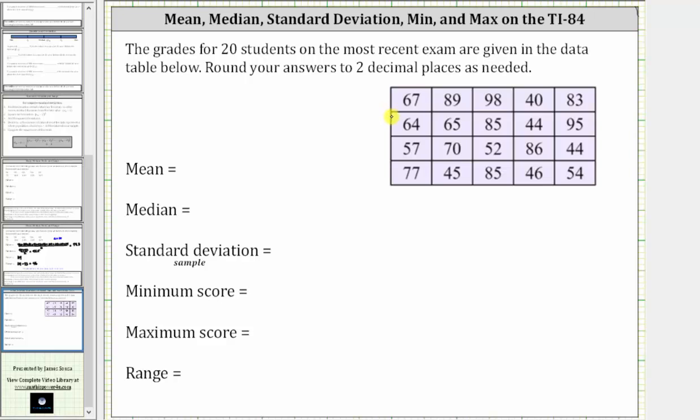This video will show how to use the one-var stats tool on the TI-84 to determine the mean, median, standard deviation, min, and max. We are given the grades for 20 students on the most recent exam in the data table below and asked to round answers to two decimal places.